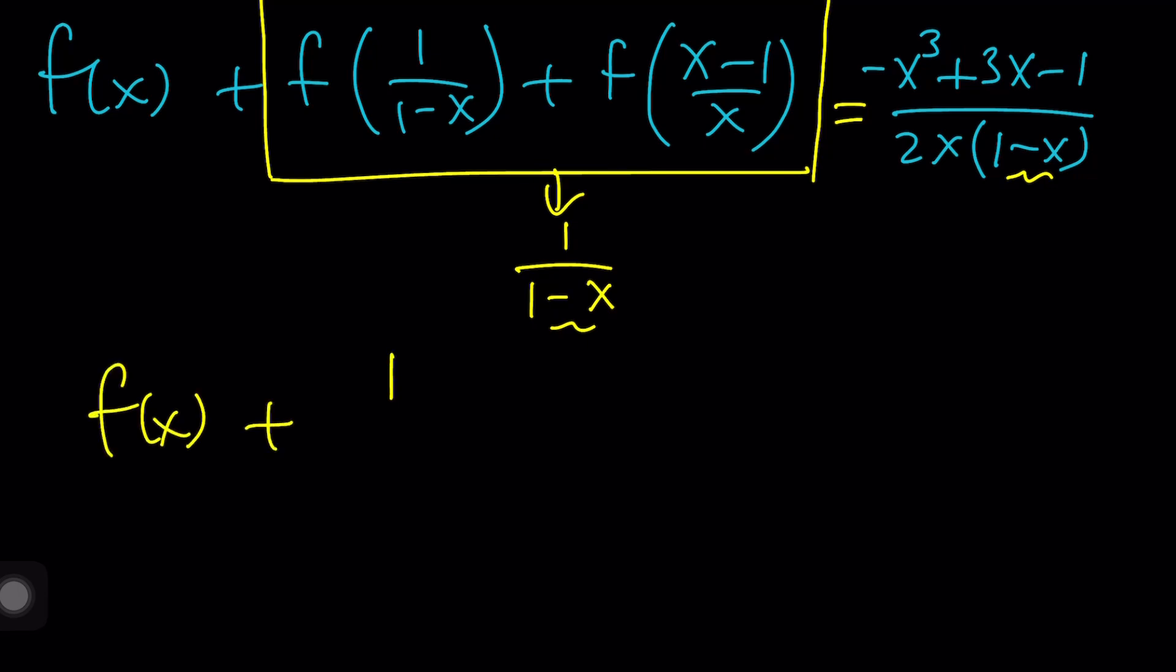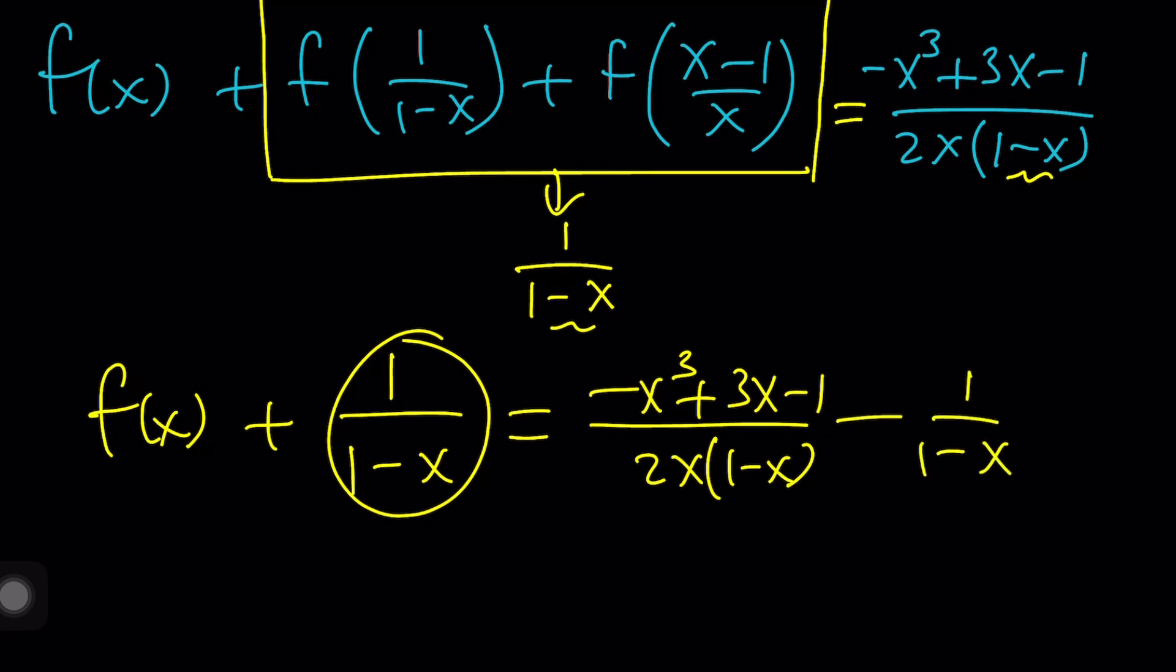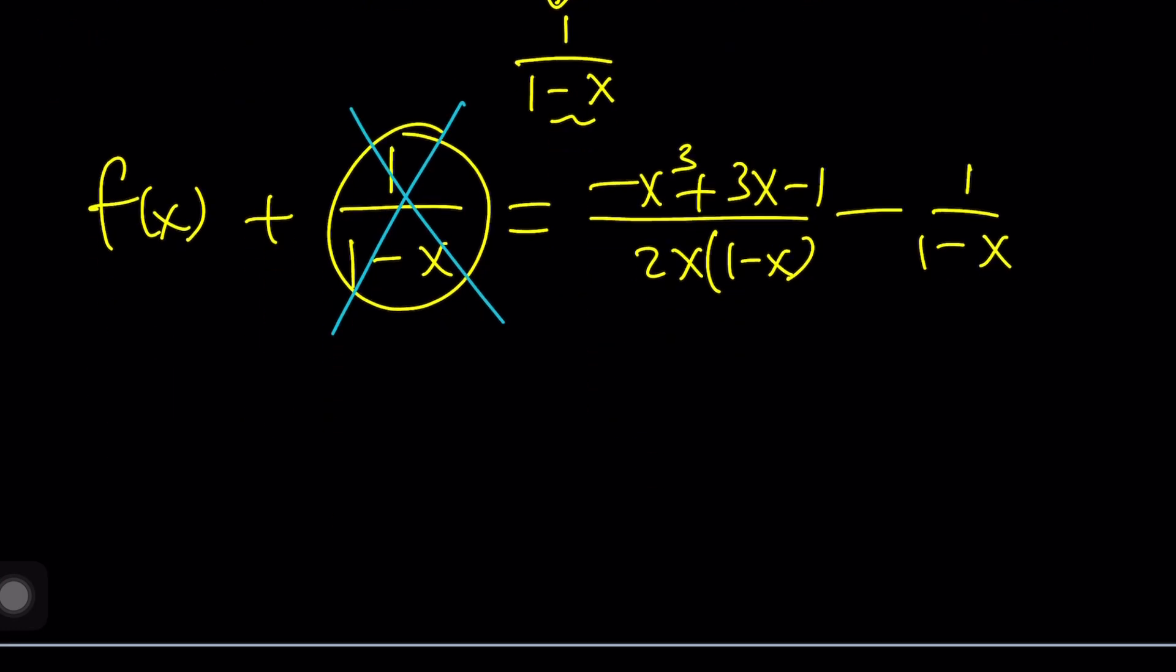So here's what I get. f of x plus 1 over 1 minus x equals negative x cubed plus 3x minus 1 divided by 2x times 1 minus x. Now subtract this, minus 1 over 1 minus x. Cross it out, and then you got the answer. But now making a common denominator would be fairly easy. Just multiply by 2x and do the math. And that's going to give you negative x cubed plus 3x minus 2x, that's just going to be a plus x minus 1 divided by 2x times 1 minus x. If you want to distribute it, fine. You can do it now. I know you've been waiting for this moment.